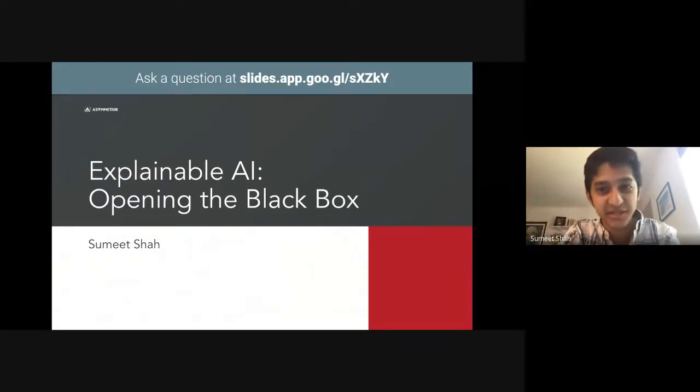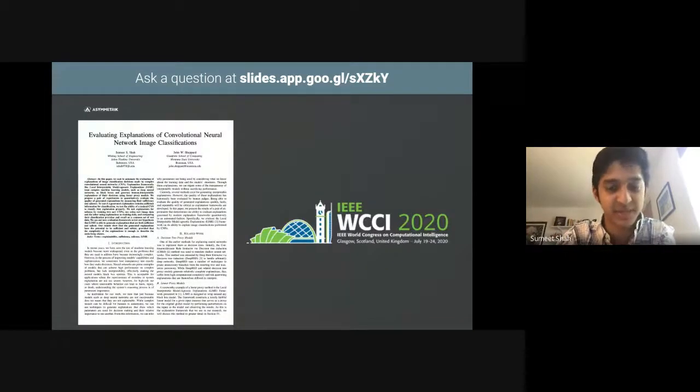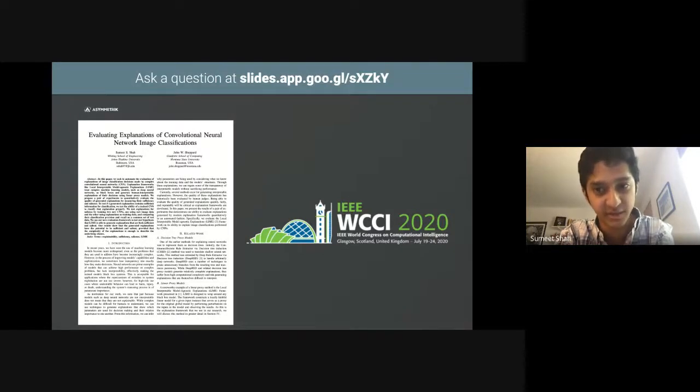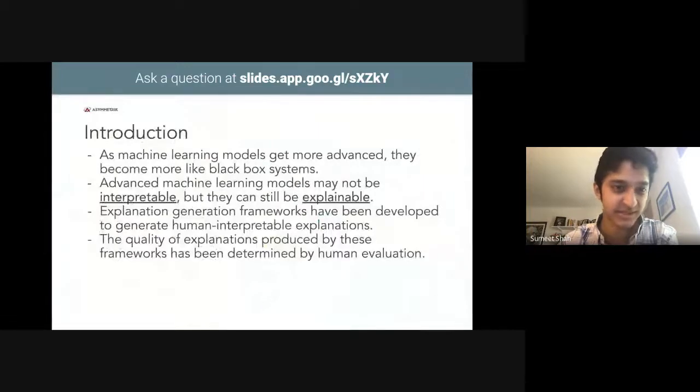For those of you who don't know me, I'm Sumit Shah, a software engineer here at Asymmetric, and today we're going to be talking about a research project that I did about explainable artificial intelligence. So I recently published and presented my paper evaluating explanations of convolutional neural network image classifications at the International Joint Conference on Neural Networks as part of the IEEE World Congress on Computational Intelligence. So let's dive right in.